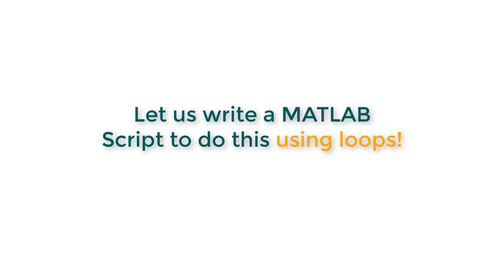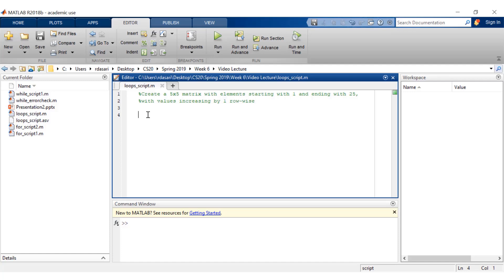Let's write a MATLAB script to do this using loops. The first step is to pre-allocate the matrix we're trying to create with zeros. This pre-allocation step is very important. Next, create a running sum variable starting with the value one, because that's the value in the first element. We'll do it row-wise, so we start with i equals 1 colon 5 and j equals 1 colon 5.